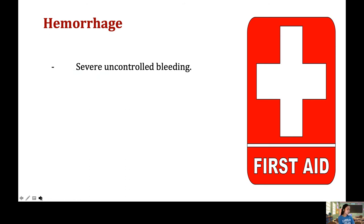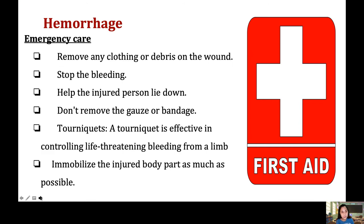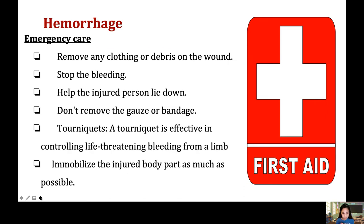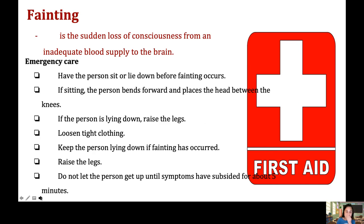Hemorrhage is severe, uncontrolled bleeding. First, remove any clothing or debris from the wound. Stop the bleeding and help the injured person lie down. Do not remove any gauze or bandage, as this increases bleeding. You can use a tourniquet to apply pressure to the bleeding site. Immobilize the injured body part as much as possible. In all bleeding, apply pressure to stop it.